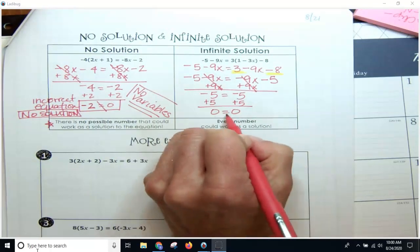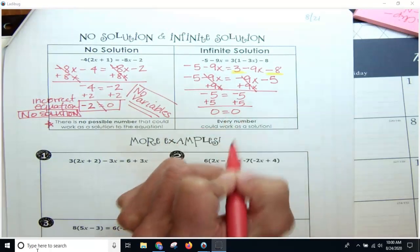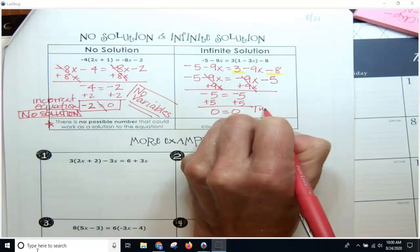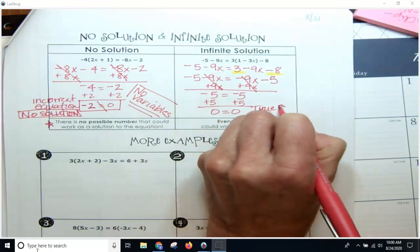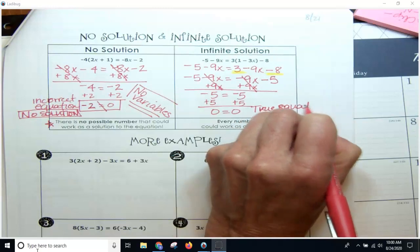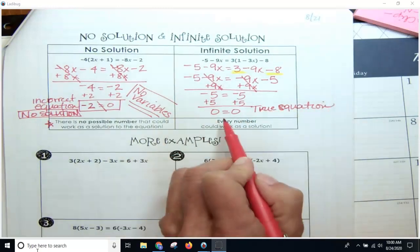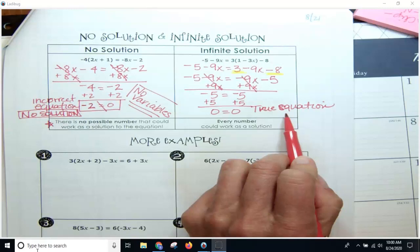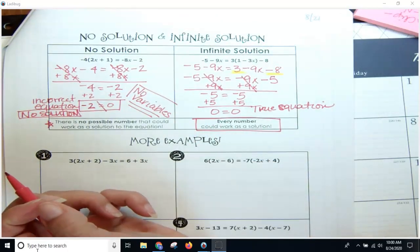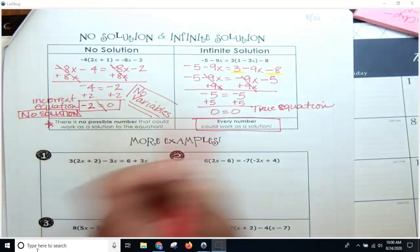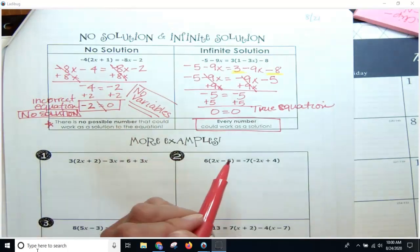And as you see here again, I have no variable but 0 does equal 0. This is a true statement or true equation. And what that means is if you get no variables and a true equation, then no matter what number we would plug in for x, that would work. Okay, so those are the differences. They are very important. And then there is not to be confused when you get x equals 0, but we'll talk about that later.